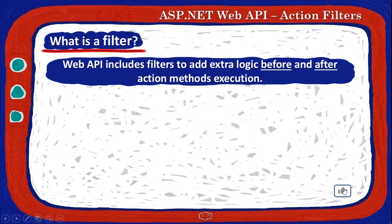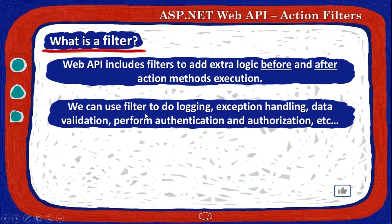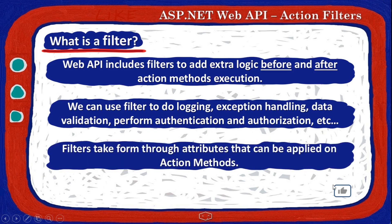Web API allows us to add extra logic before and after action methods execution. We can do things like logging, exception handling, data validation, perform authentication and authorization and so on. Filters take form through attributes that can be applied on our action methods.